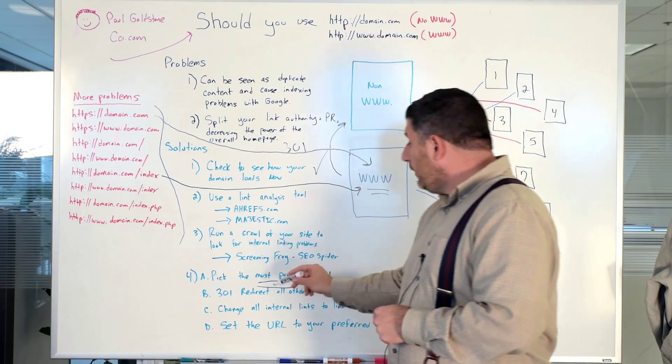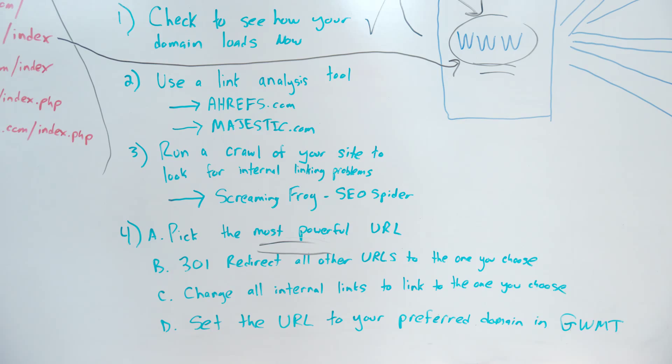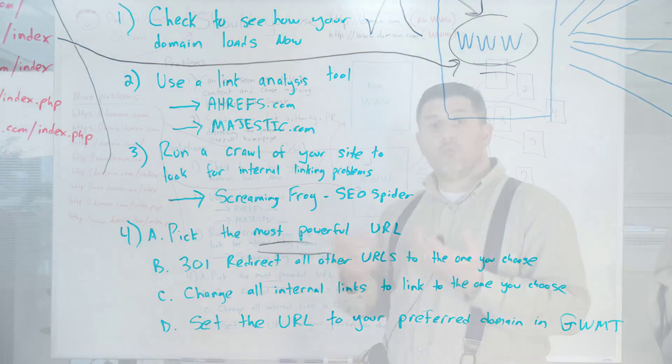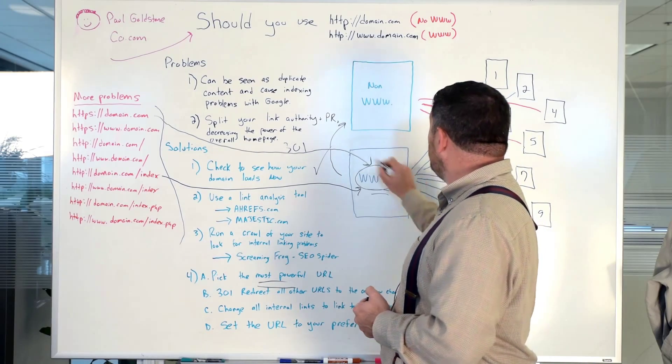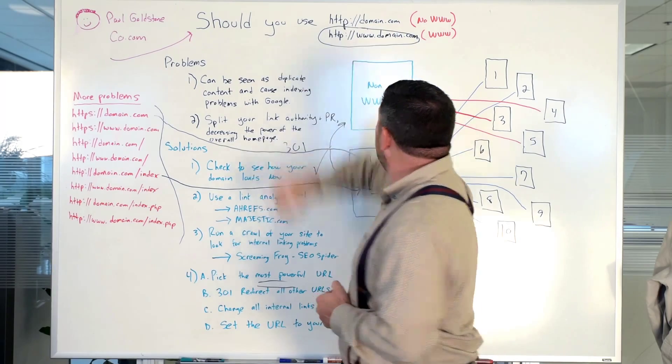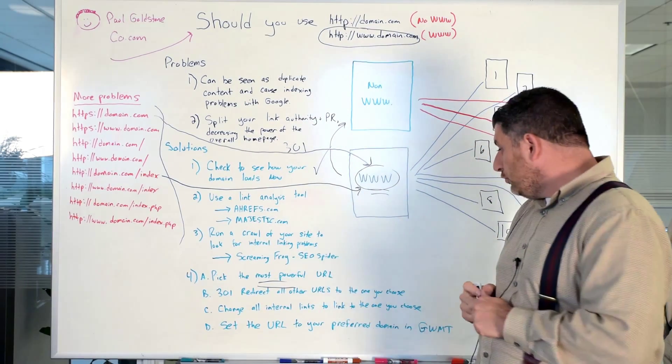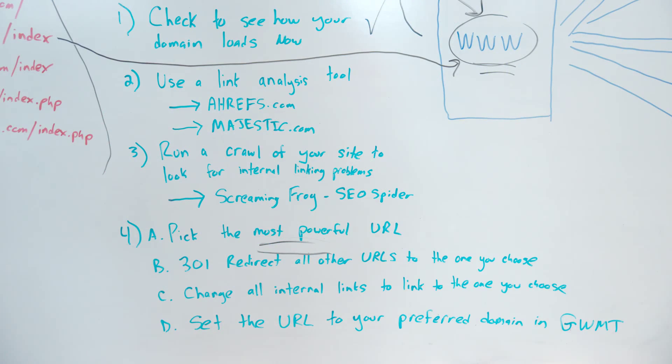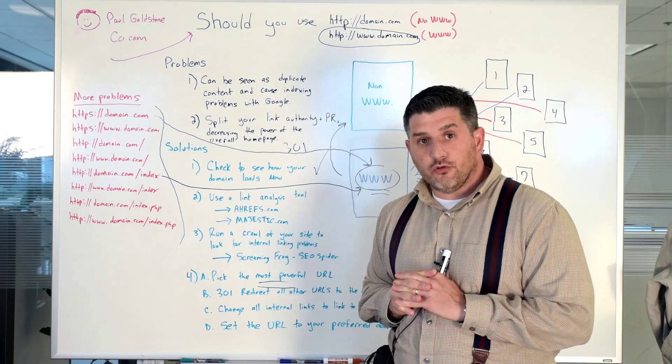Next thing you want to do is you want to go in after you do this crawl and you want to change all the internal links so they all point to the same root domain the homepage. And again if we're going to use the www have all the links point to that. And then within Google Webmaster Tools you want to set the URL to your preferred domain and that's something that Google allows you to do in Google Webmaster Tools.